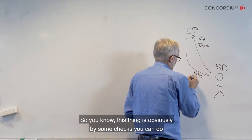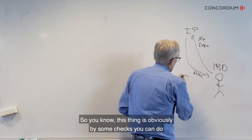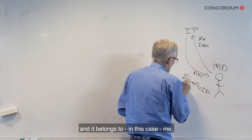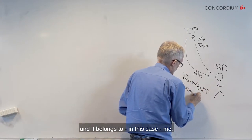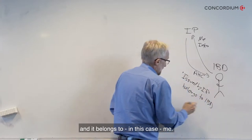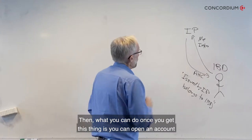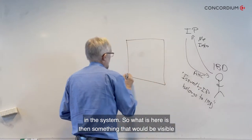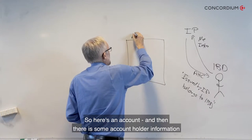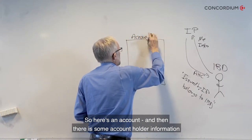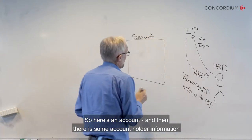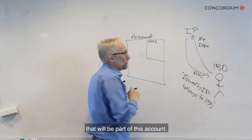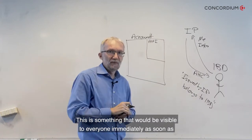This certificate really was issued by the identity provider and belongs to you. Once you get it, you can open an account in the system. What is visible to everyone is then some account holder information that would be part of this account — visible to everyone immediately as soon as the account is opened.